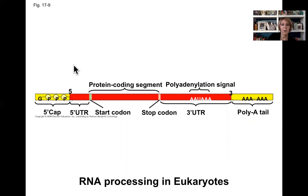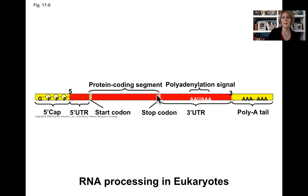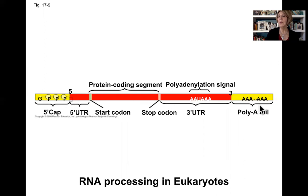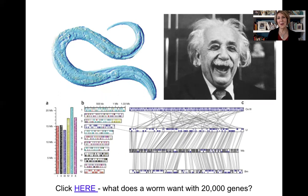Here is RNA processing in eukaryotes. There's my 5' cap at the start of the messenger RNA transcript, then the start codon, the actual protein-coding region through to the stop codon, then the polyadenylation signal telling where RNA polymerase falls off, and then the poly-A tail. All of those modifications begin the alteration of my messenger RNA transcript.